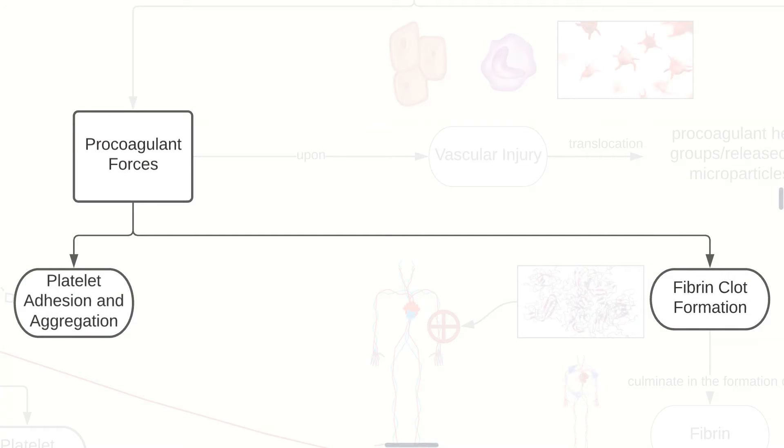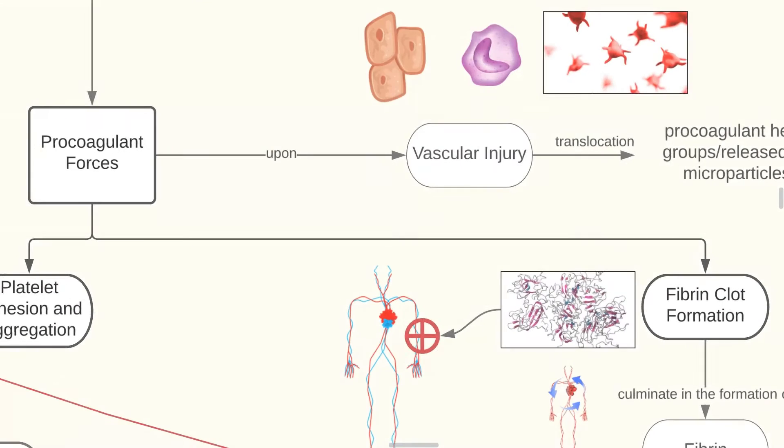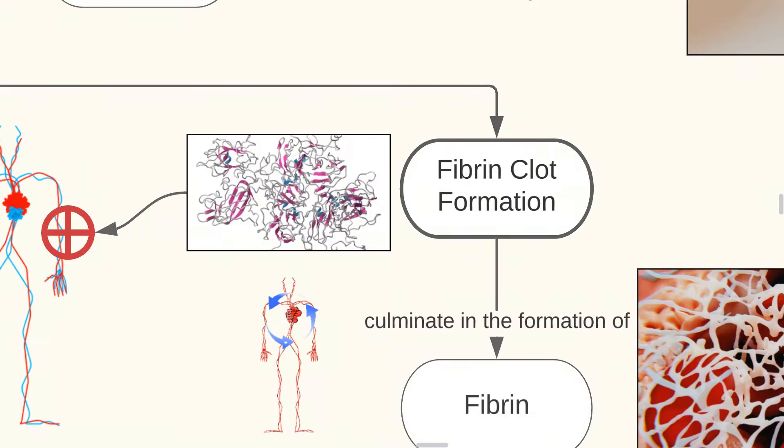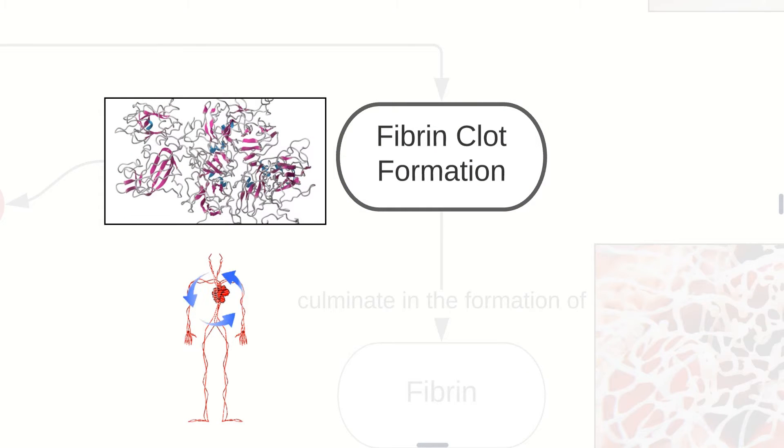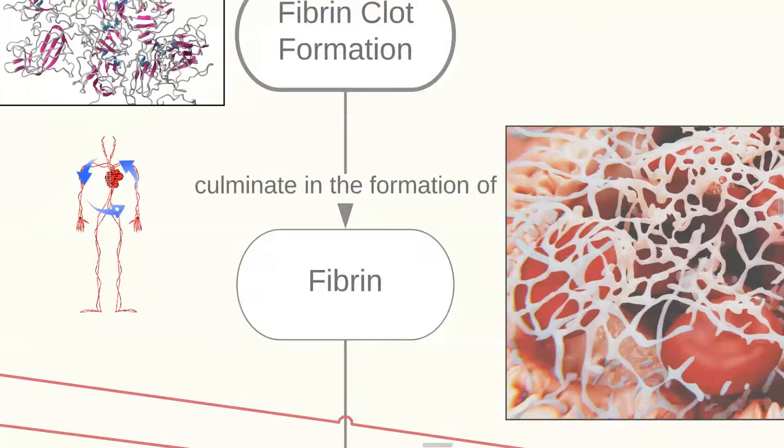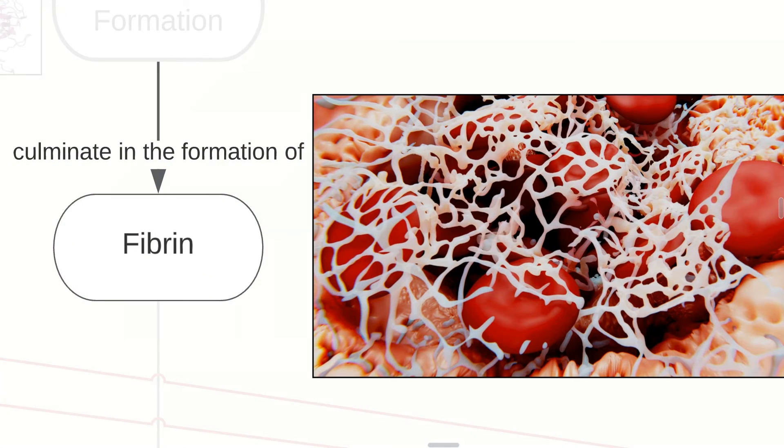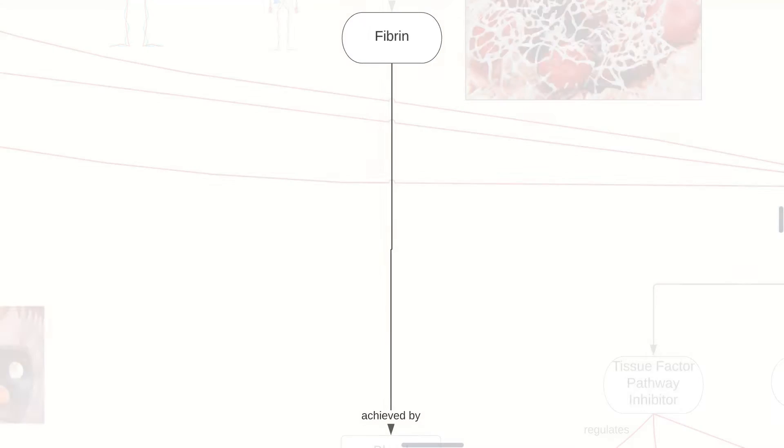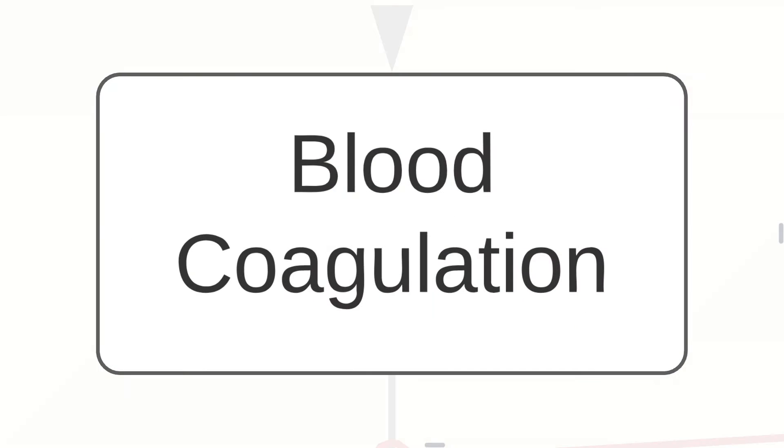Now that we've discussed platelet adhesion and aggregation, let's discuss fibrin clot formation. Take note that these reactions take place on phospholipid surfaces, usually on activated platelet surfaces. They serve to localize blood clotting to sites of vascular injury, and they culminate in the formation of fibrin, which is achieved by blood coagulation.